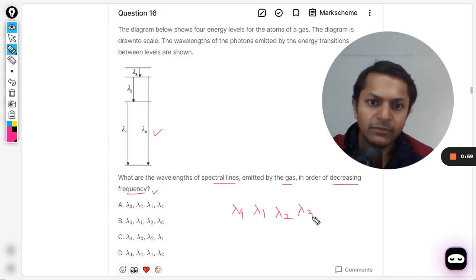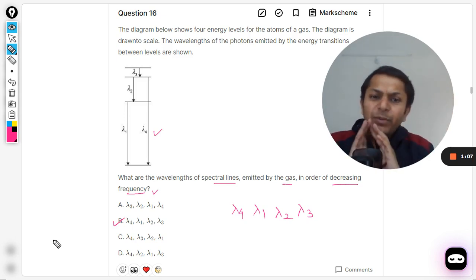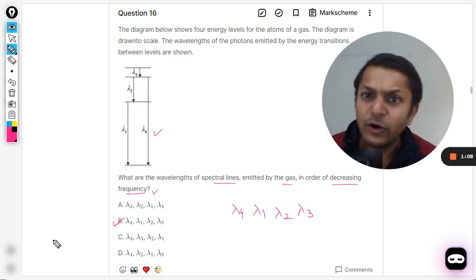So lambda 4, lambda 1, lambda 2, lambda 3. B is the answer for this question. It's completely straightforward, don't get confused about it.